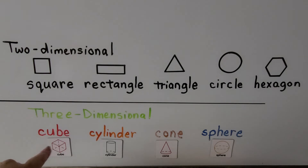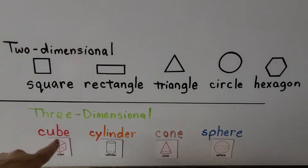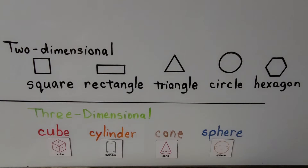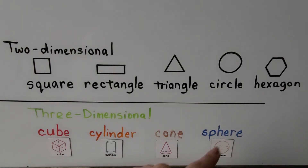Three-dimensional shapes are solid shapes. They take up space. The surfaces of three-dimensional solid shapes are flat or curved, but the whole shape takes up space. Solid shapes have surfaces that look like flat surfaces, and some solids, like a sphere, have no flat surface.